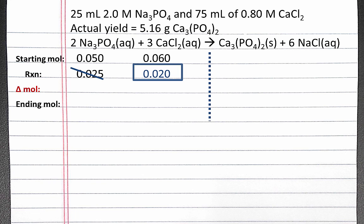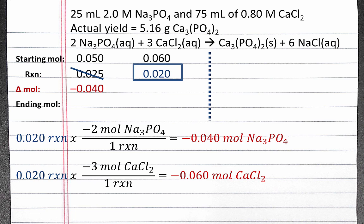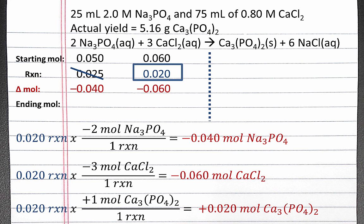Next, we can calculate the change in moles by using the number of reactions we can perform with our limiting reagent. We can perform 0.02 reactions. To calculate the change in sodium phosphate, one reaction will use up 2 moles of sodium phosphate, so we'll lose 0.04 moles. For calcium chloride, one reaction uses up 3 moles, so we'll use up a total of 0.06 moles of calcium chloride. We can also calculate the moles of calcium phosphate produced: one reaction produces one mole of calcium phosphate, so we'll produce 0.02 moles. We don't need to calculate sodium chloride, since in our problem we're only concerned about the precipitate.